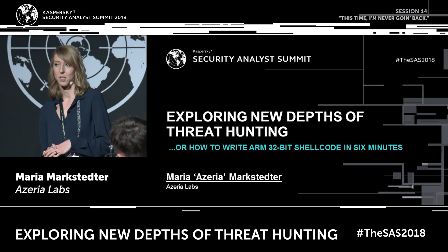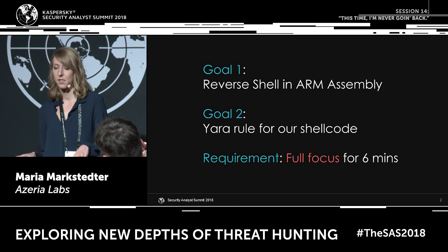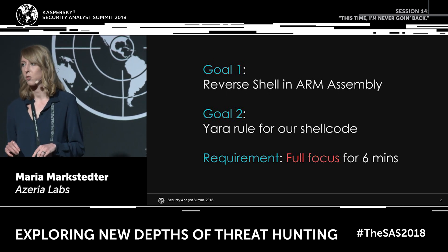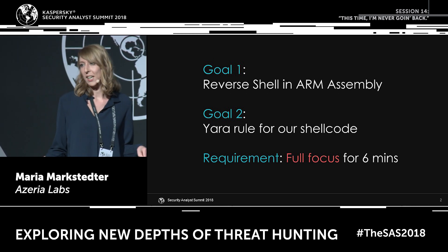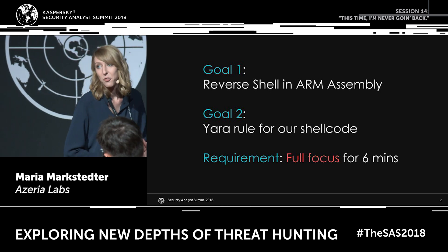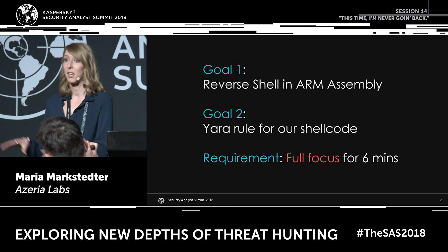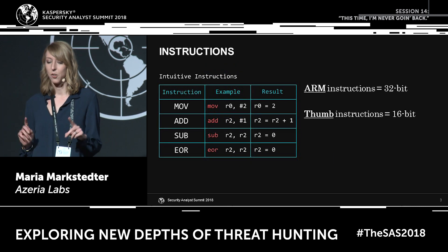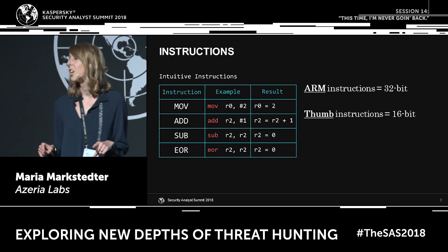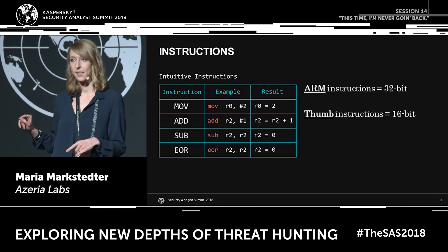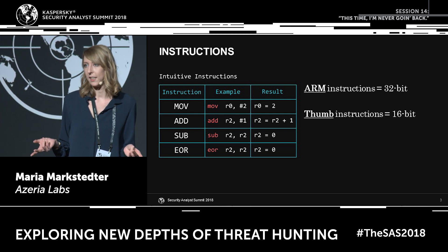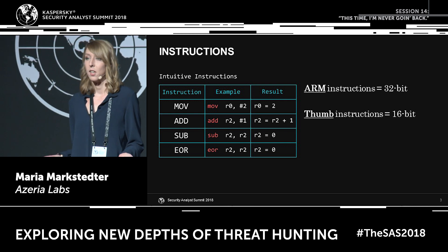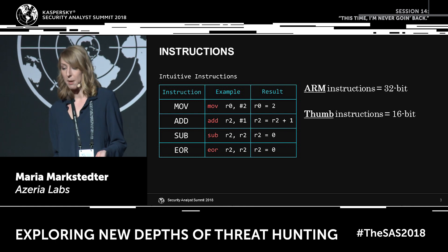Since we cannot possibly cover all the details of ARM assembly in six minutes, I will only give a very brief introduction into ARM assembly and only cover the most important instructions in order to write the shellcode. I need you to be fully focused because this will be intense — look at the slides, not at me. In ARM you have either 32-bit instructions or 16-bit instructions in thumb mode, which is important because we will use thumb mode for our shellcode.